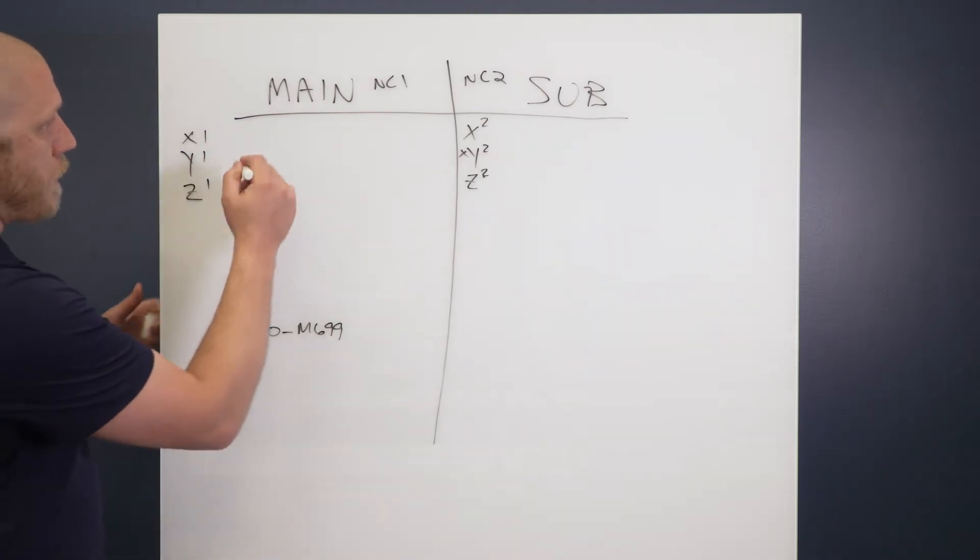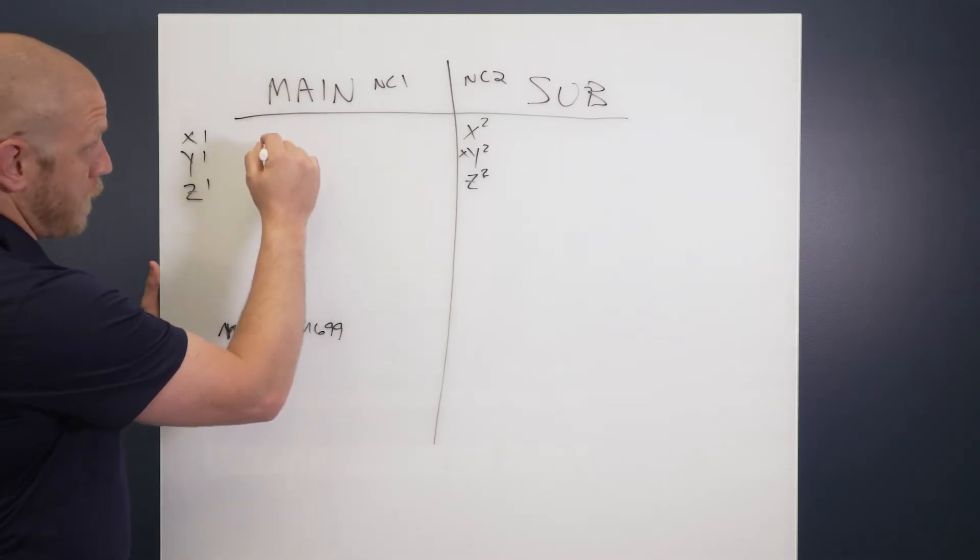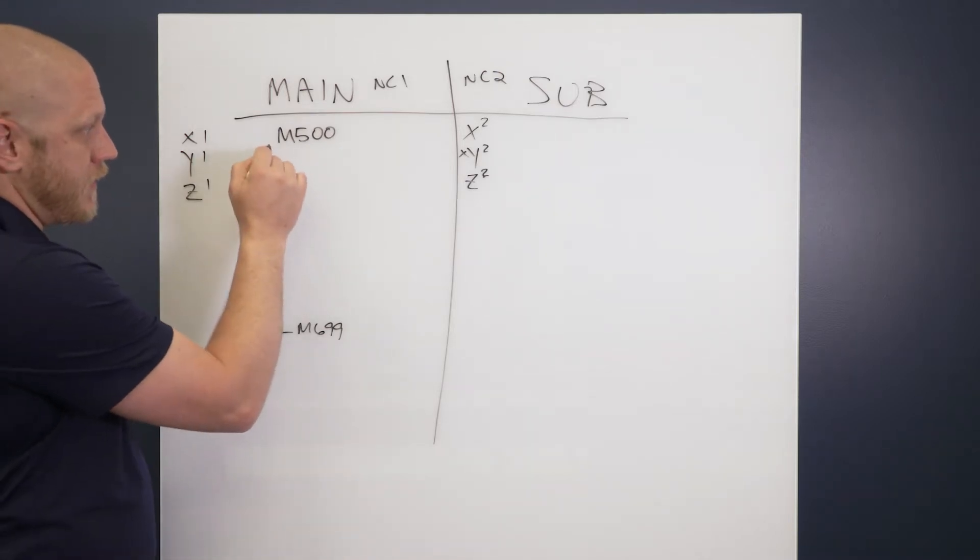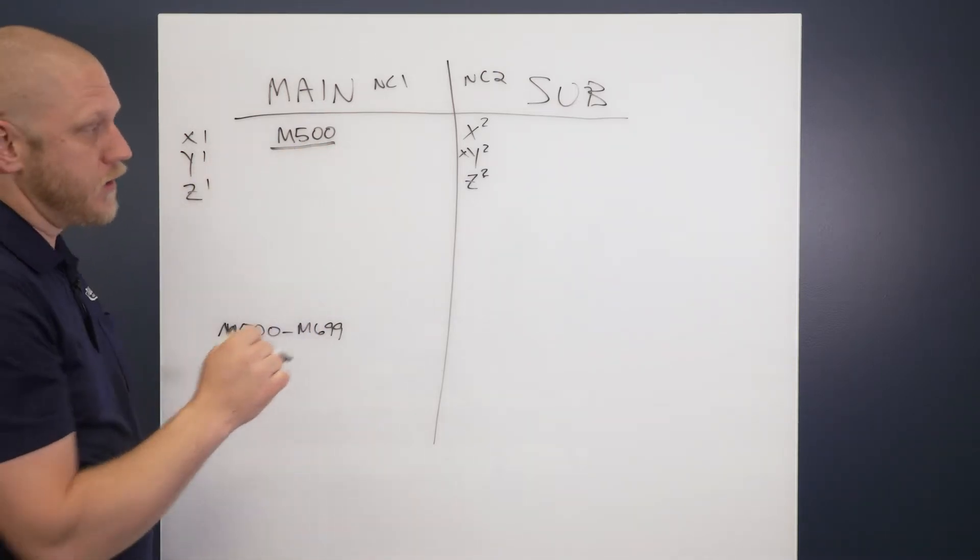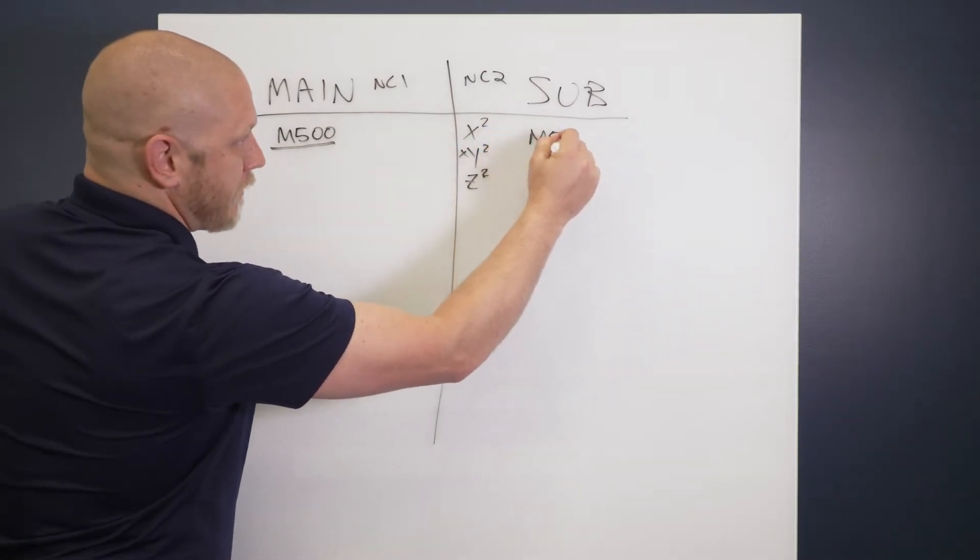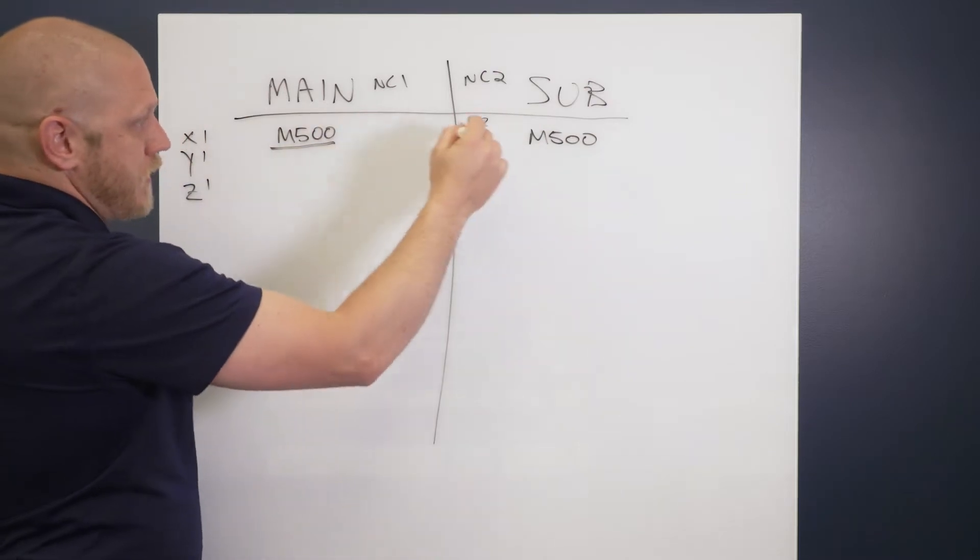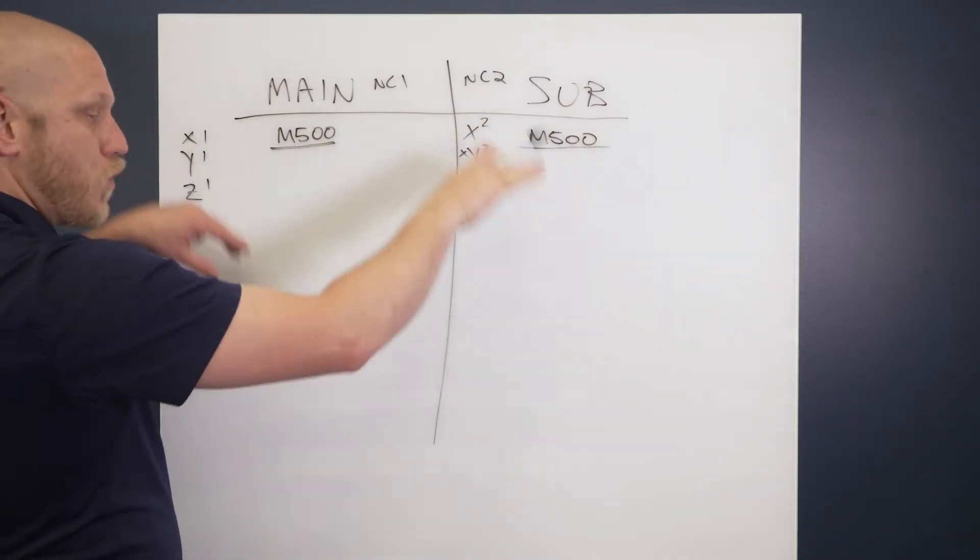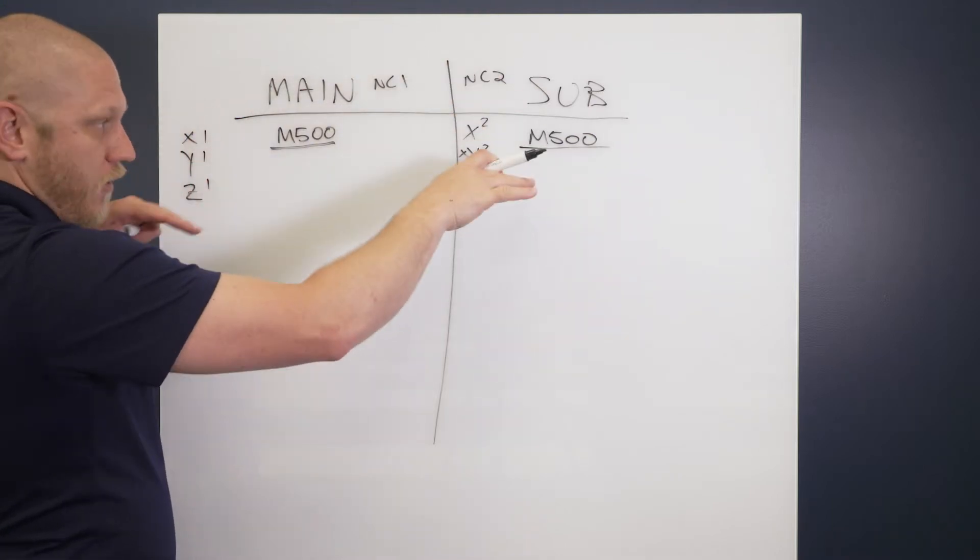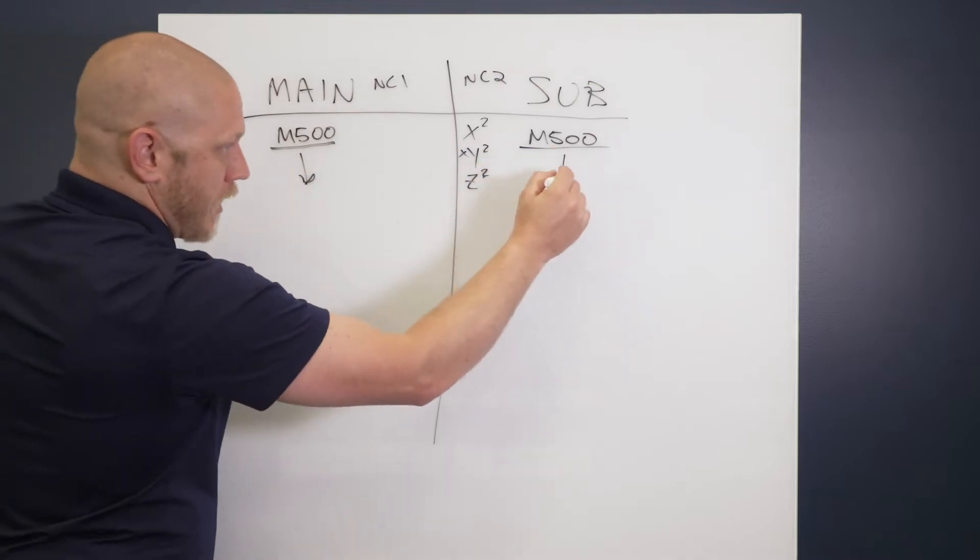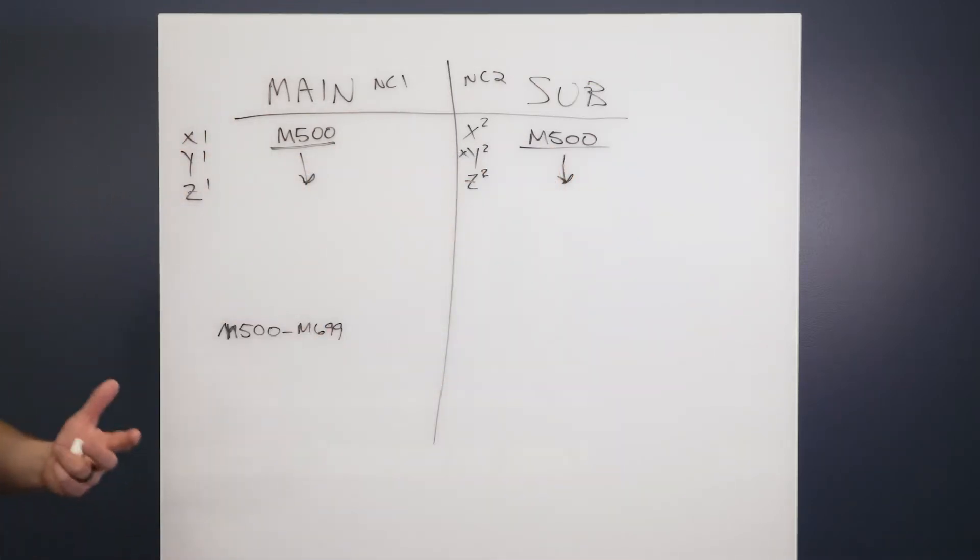Basically how these work is on one path, if it reaches a weight code, we'll call it M500, it will sit right here on this weight code until this path reads the same weight code. As soon as this path reads the same one that this one's waiting on, no matter which one arrives first, as soon as the second one reaches and they match, both programs are going to take off again and continue to do whatever they need to do next.